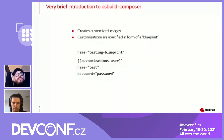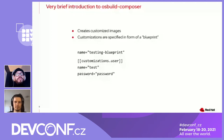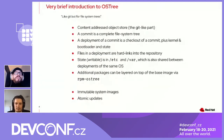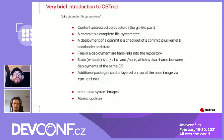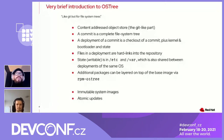Now Christian will talk about OSTree. What is OSTree? The tagline of OSTree is like Git, but for file system trees. Basically, all the stuff stored in a repository is content addressed, very much like Git.